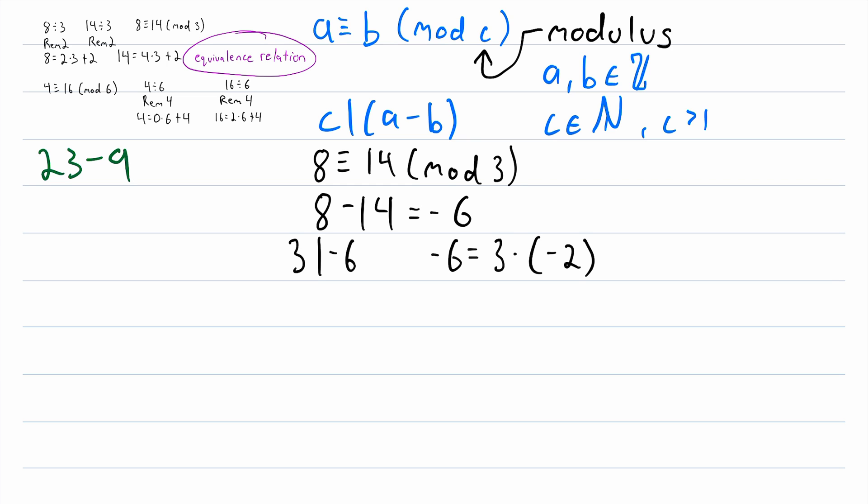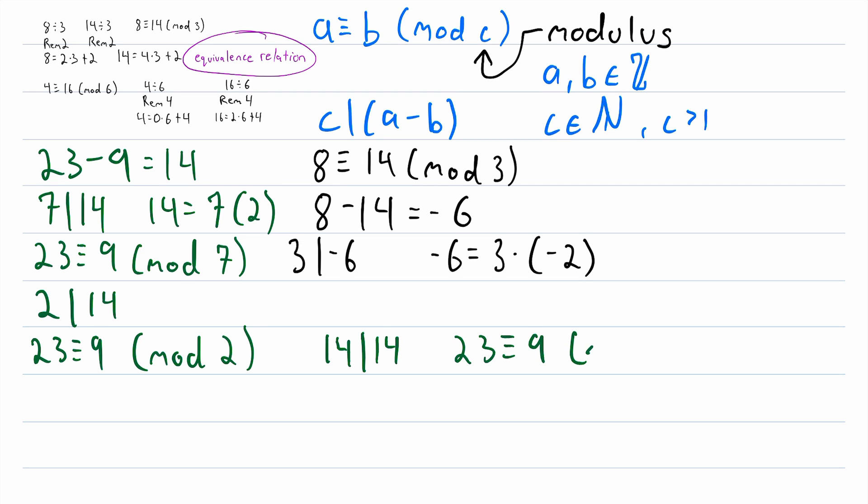Now let's see an example of using this definition to establish modular congruence. Consider 23 minus 9. 23 minus 9 is equal to 14, and we know that 7 divides 14, because 14 is equal to 7 times 2. So since 7, our c value in this case, divides 23 minus 9, our a and b values respectively, that means that 23 is congruent to 9 mod 7. Additionally, since 2 divides 14, we could also say that 23 is congruent to 9 mod 2. Also, 14 divides 14, so we could say that 23 is congruent to 9 mod 14.